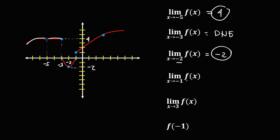Then the limit as x approaches negative 1 — this is negative 1. The left side limit is 0 and the right side limit is positive 1. Since they are not equal, therefore this limit does not exist.